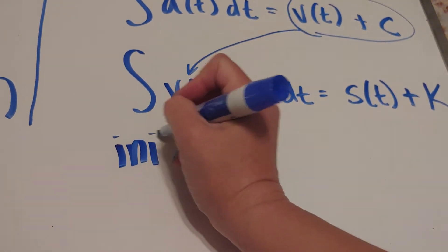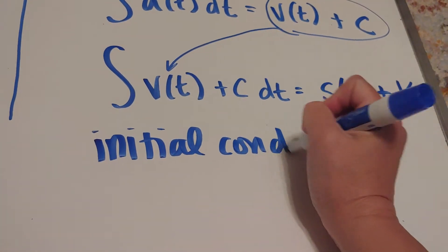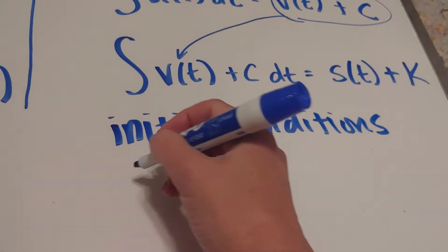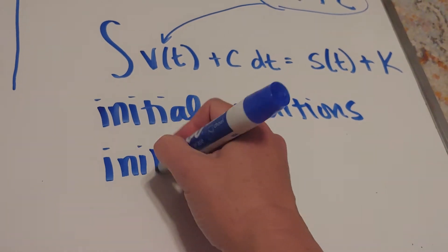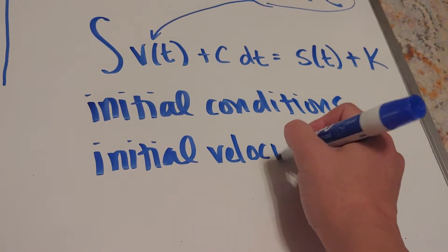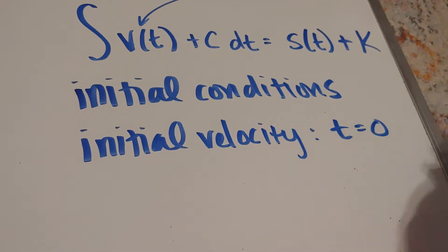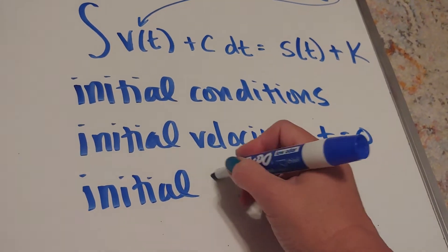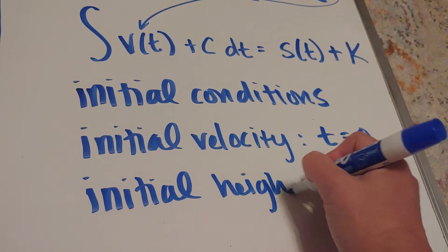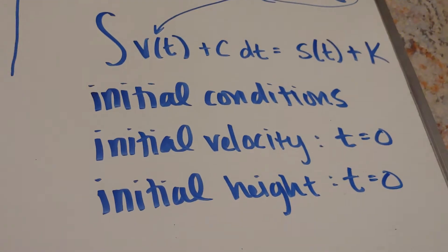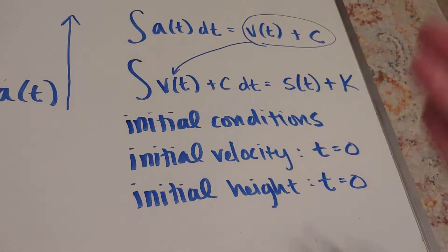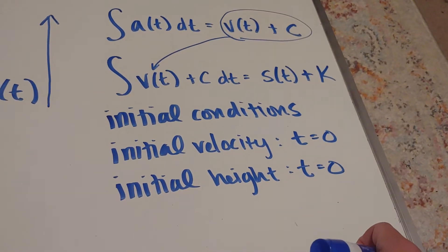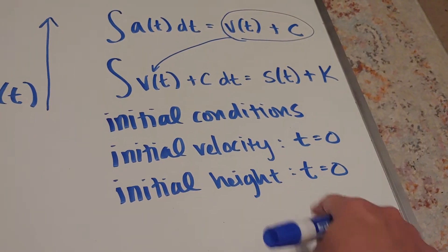Typically, the initial conditions that will be given for one of these velocity, acceleration, position problems is I'll be given initial velocity, which is the velocity when the time is zero, and I'll be given the initial position or initial height. Again, that corresponds to when t is zero. So I'm going to show you a problem where we are given the acceleration and we work backwards to get the velocity function and the position function given initial conditions.